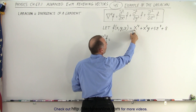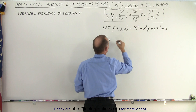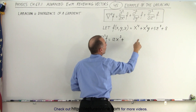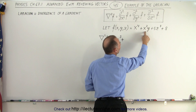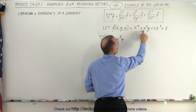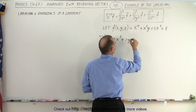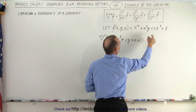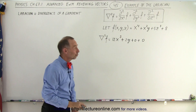The first derivative of the first term is 4x cubed, so the second derivative would be 3 times 4, or 12x squared. Then we take the derivative of the next term with respect to x, which gives 2xy, and the second derivative with respect to x gives 2y. The remaining terms contribute 0 when differentiated twice with respect to x.